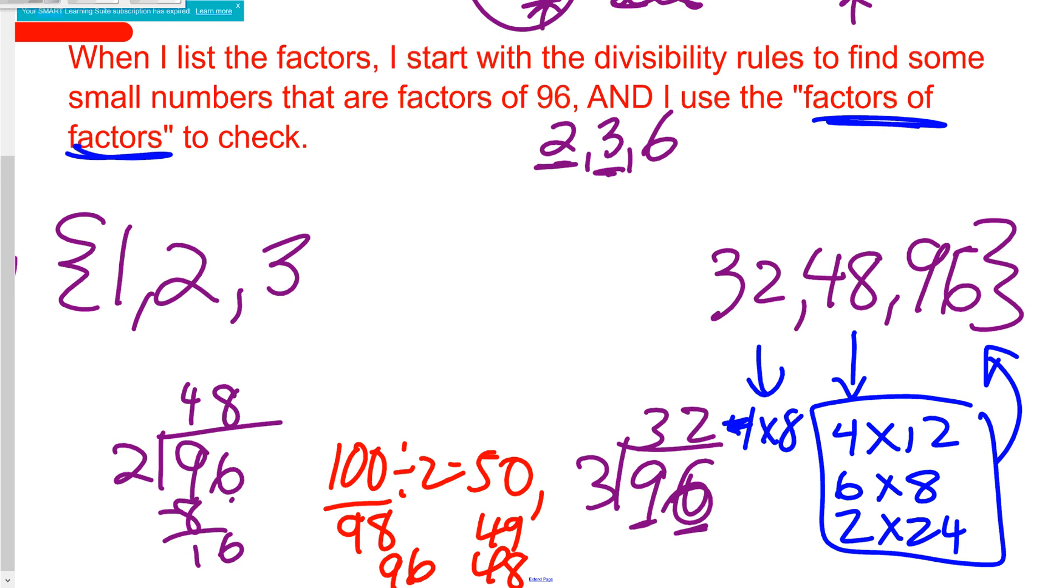Now I can also look at 32. 32 has 4 times 8, but I already knew those. 32 also has 2 times 16. Oh, there's a new one. So now I know some new factors: 4 is going to work, 6 is going to work, 8 is going to work. All of these are going to work for 96.